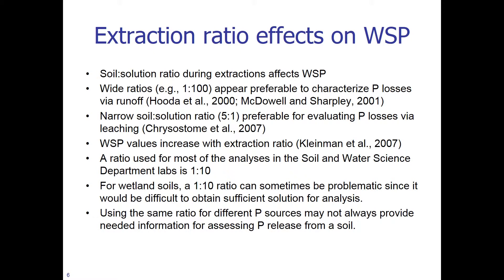If you repeatedly extract a soil at a narrower soil-to-solution ratio, more P will be continuously removed. The ratio used for most analyses in the soil and water science department labs is 1-to-10. For wetland soils, a 1-to-10 ratio can sometimes be problematic since it would be difficult to obtain sufficient solution for analysis. Also, using the same ratio for different P sources may not always provide the needed information for assessing P release from a soil.